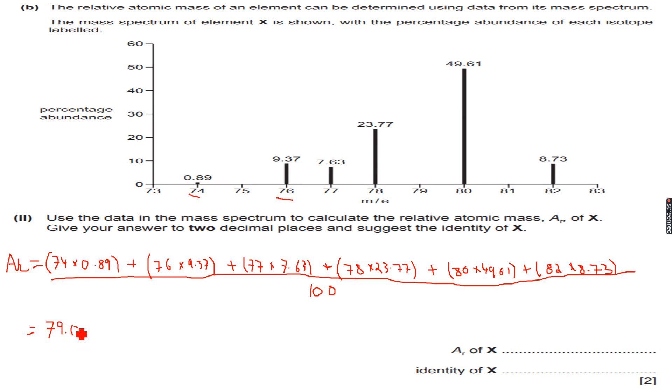79.04, which is - it says give the answer to two decimal places. I've given it to two decimal places so we are good there. So I get my answer as 79.04.